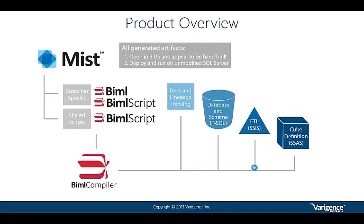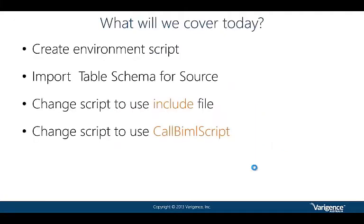Here's what we'll cover today: first I'll set up the environment — connections and so on. Then I'll write a fairly simple table schema import from the source system using the natural metadata available there. Then I'll take that file and change it to use what we call an include file, which lets you centralize a small or large piece of code so multiple BIML files can reuse it. Finally, I'll show something I use quite a bit but don't see many examples of online — Call BIML Script, which lets you call another BIML file with parameters.